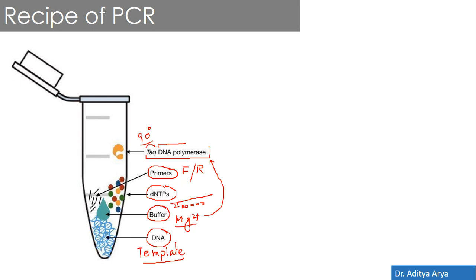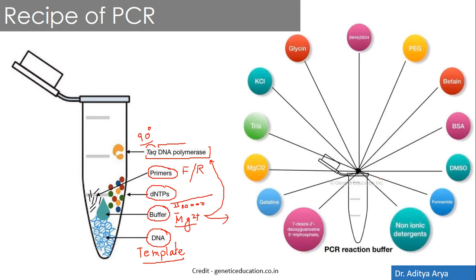These components must be dissolved in a specialized buffer that maintains pH and requisite conditions. The buffer contains essential ingredients such as magnesium ions, which are prerequisites for the activity of DNA polymerase. Other buffer components include magnesium chloride, ions to maintain ionic strength, glycine, betaine, bovine serum albumin, small amounts of DMSO, formamide for dissolution, and non-ionic detergents. Nowadays most buffers are ready-made and available in pre-formulated compositions.